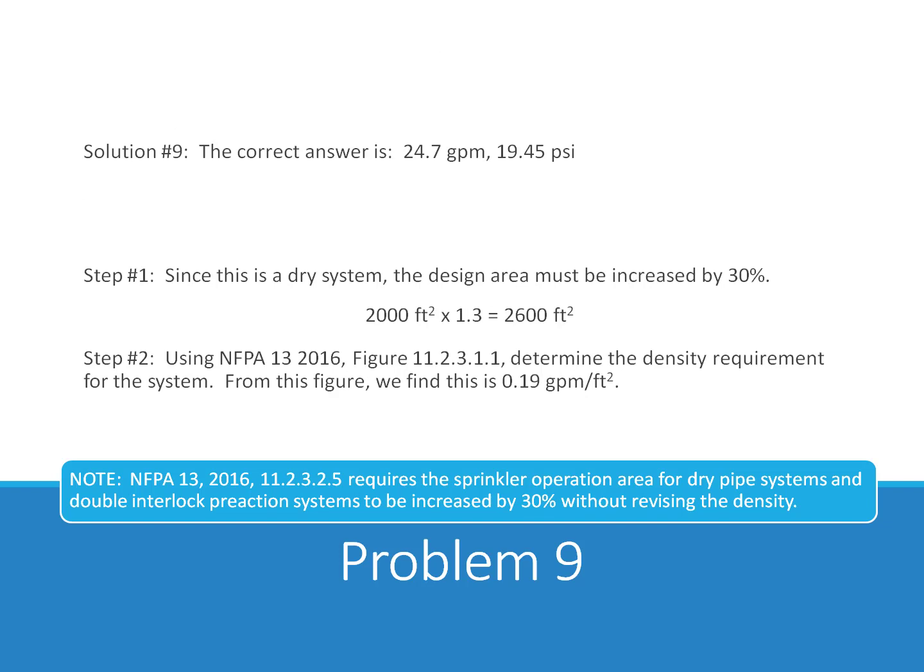Playing Jeopardy, the solution to problem number 9, the correct answer is 24.7 gallons per minute at 19.45 PSI. Step 1. Since this is a dry system, the design area must be increased by 30%. So if we had a square footage of 2,000 square feet, we multiply that times 1.3, that will give us 2,600 square feet.